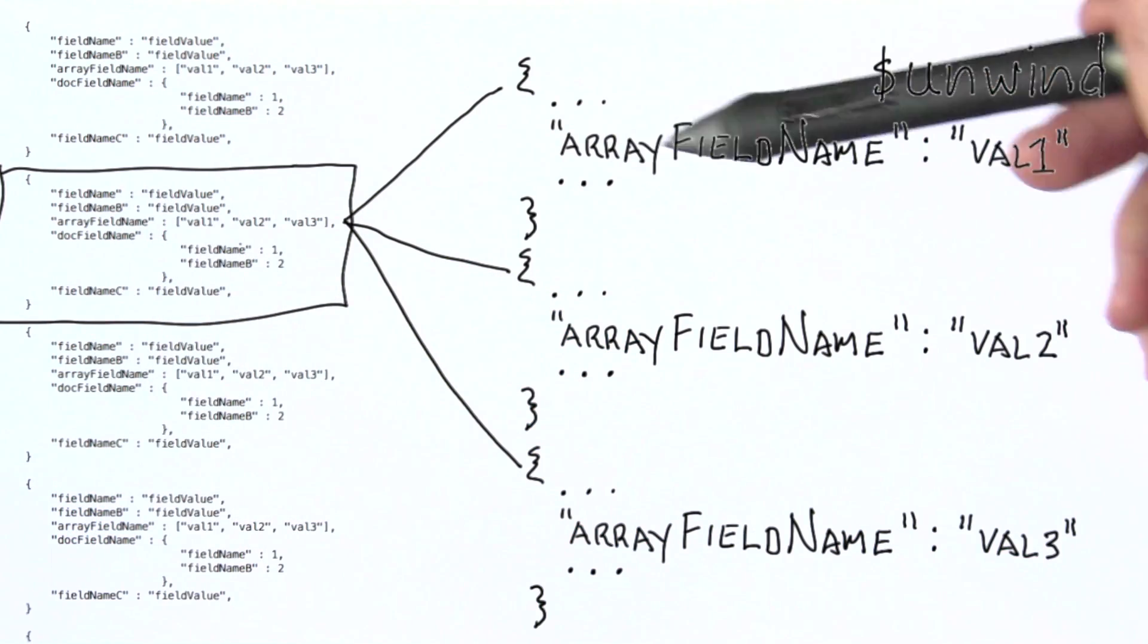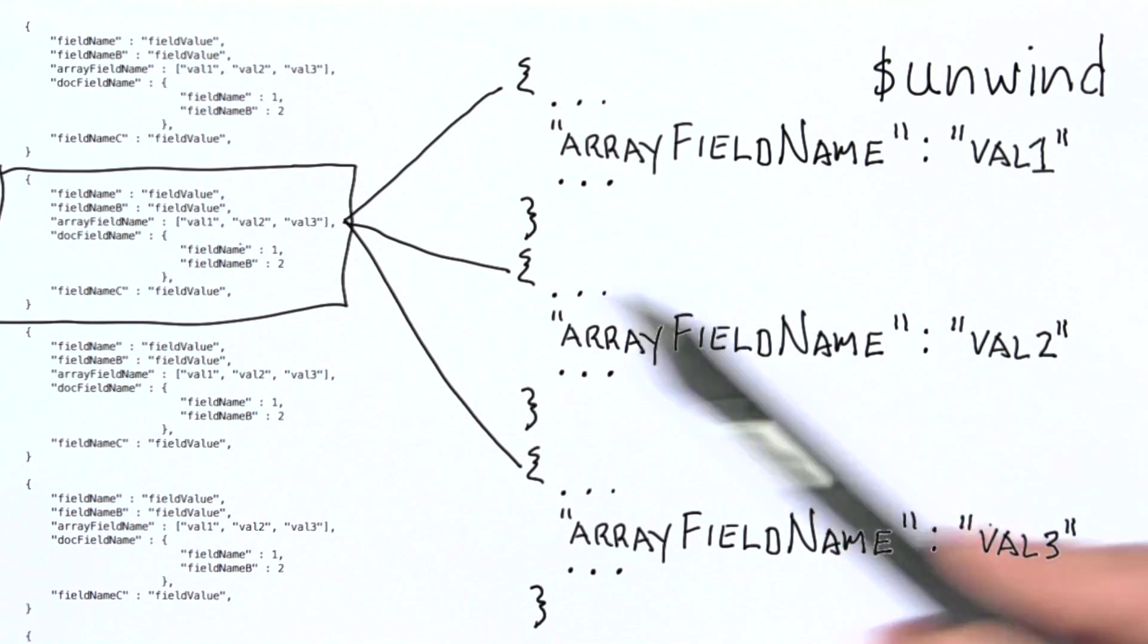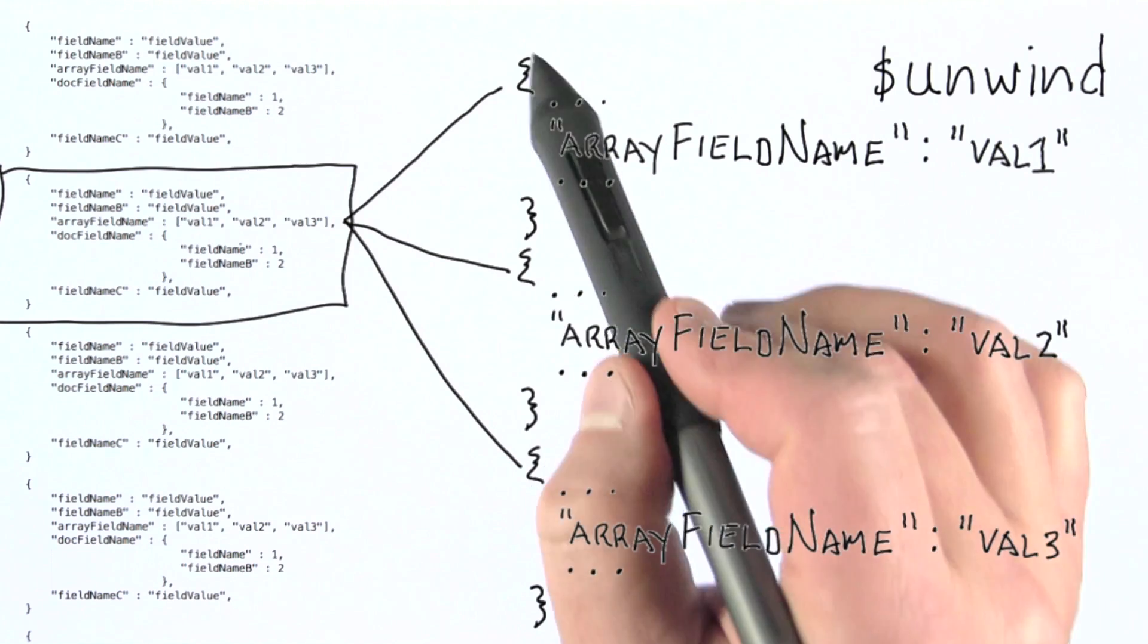So in this example, we would get three different documents. I'm representing the additional fields here using ellipses. But each of the individual values for this particular field would be broken out one by one into each of these three documents. All of the other fields would be exactly the same in each of the three documents.